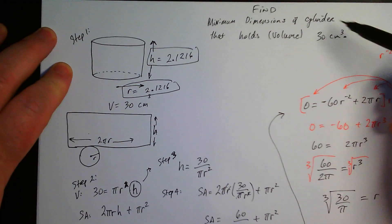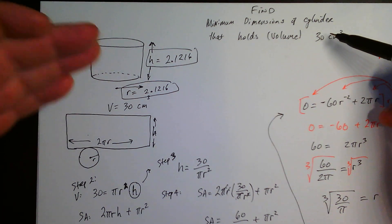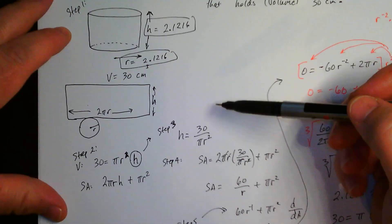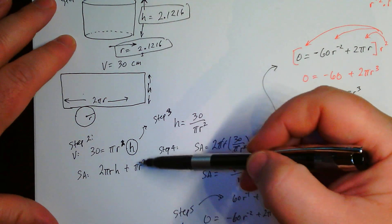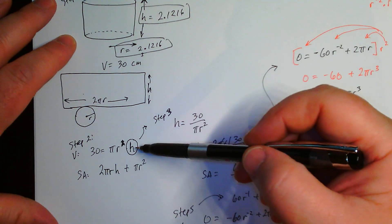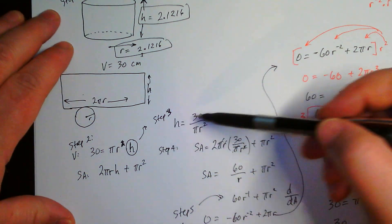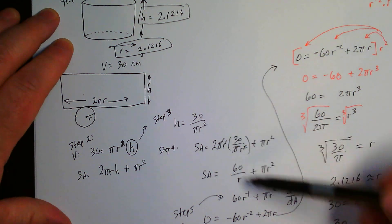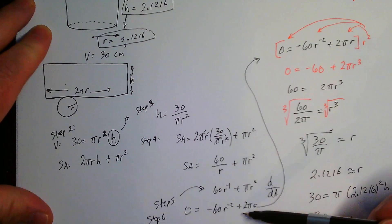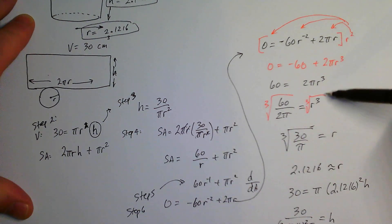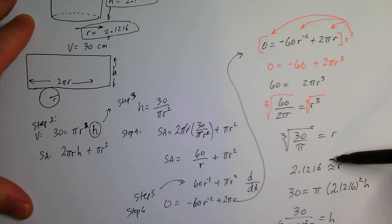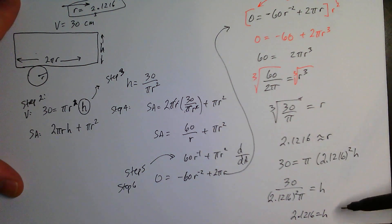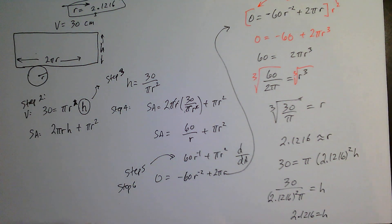Quick recap for optimization: draw a picture to visualize the problem, write formulas for the relevant quantities, solve one formula for a variable so you end up with a single-variable expression, substitute it in and simplify, take the derivative and set it equal to zero, solve for the variable, then substitute back into an original equation to find the other variable.